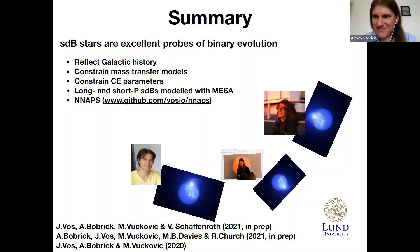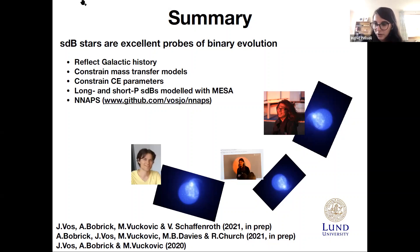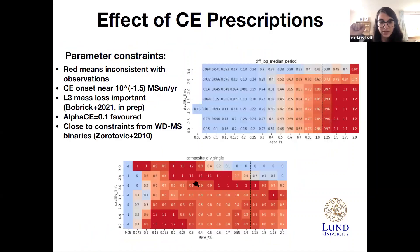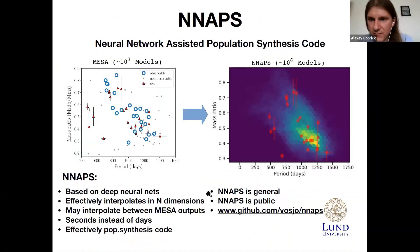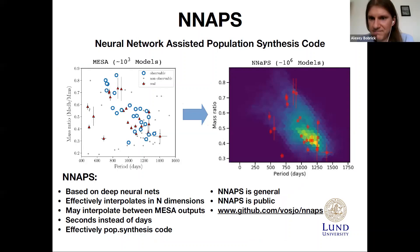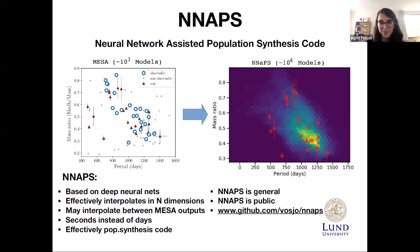Thanks, Alexey. We have time for maybe one or two questions. Going back to the plot where you have interpolated with NAPS and have 10^6 models — the red squares are the data. There seem to be two different groupings, and you seem to explain one well but not the other so much. Can you comment on that?